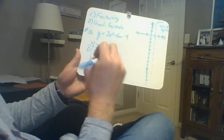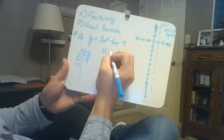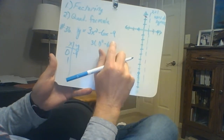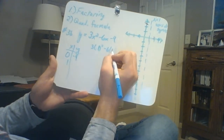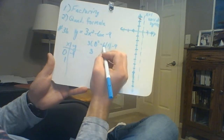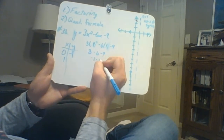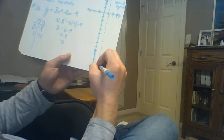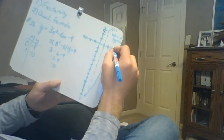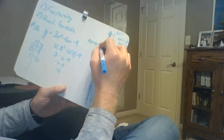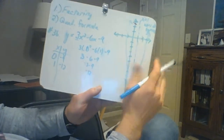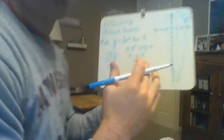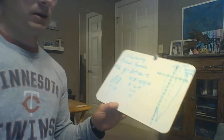The vertex lies on the axis of symmetry, so we plug x equals 1 into the equation: 3(1)² minus 6(1) minus 9 equals 3 minus 6 minus 9 equals negative 12. So the vertex is at (1, negative 12). We have a skinny parabola opening upward because the a value is greater than 1, which makes it narrower.